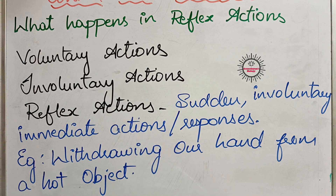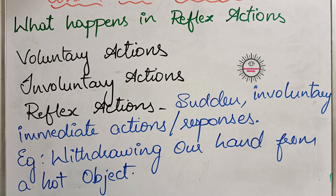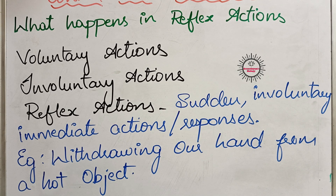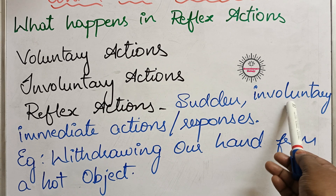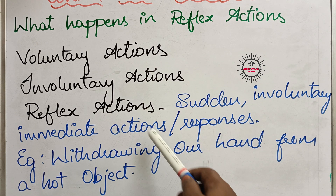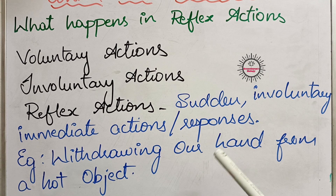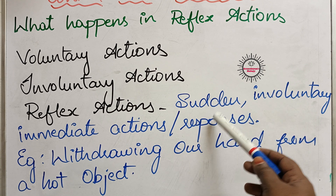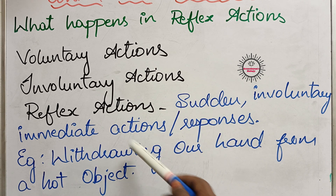The third type of actions are reflex actions. These are also involuntary, but they take place immediately — fast, within a fraction of seconds. These sudden, involuntary, and immediate actions which take place in our body are called reflex actions.